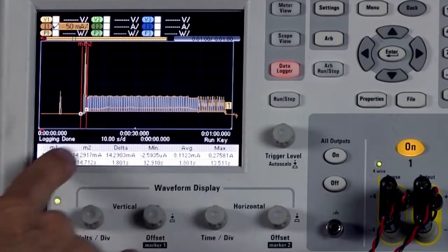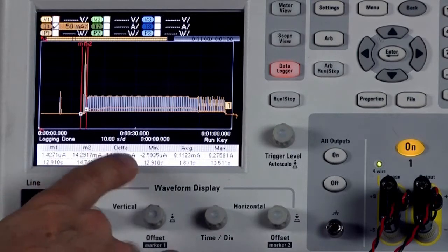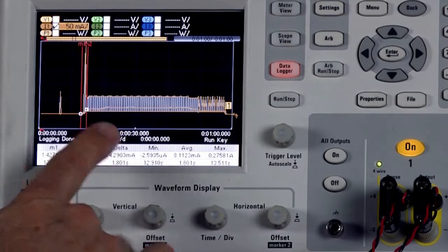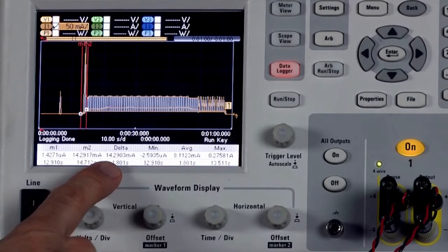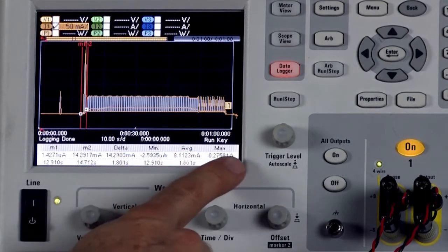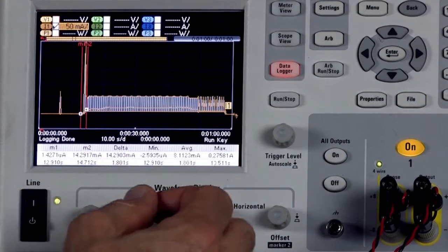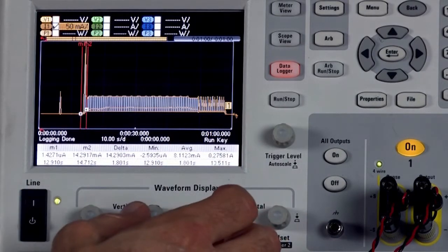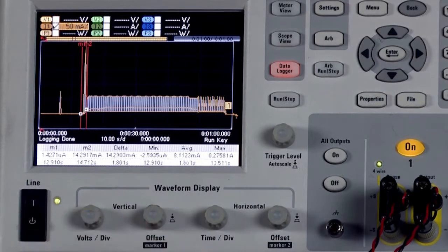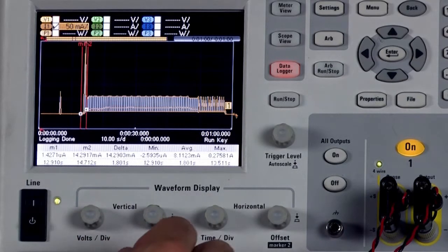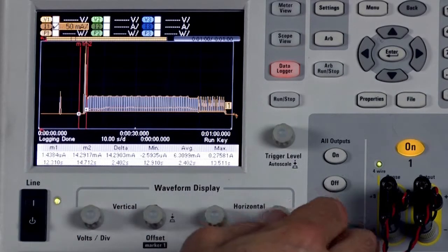The delta tells you the difference between marker 1 and marker 2, and finally the min, the average, and the max tells you in between those two markers what are the minimum, average, and maximum values. So we're going to use these to analyze the data.